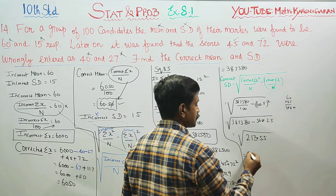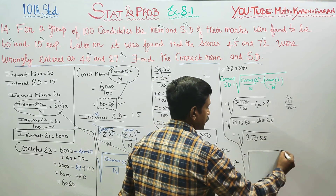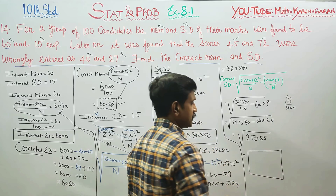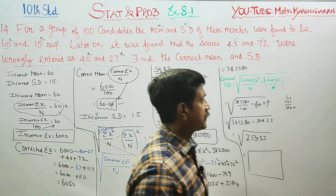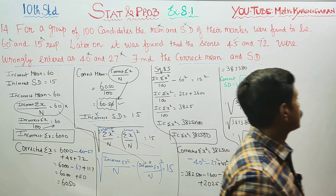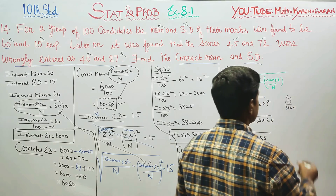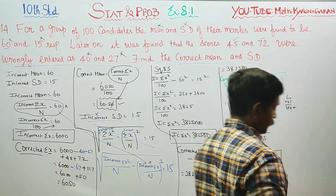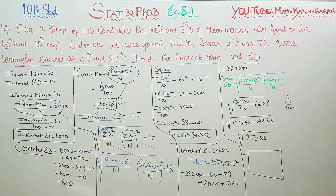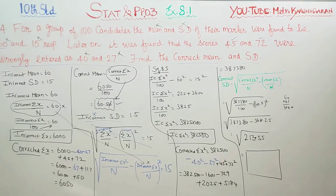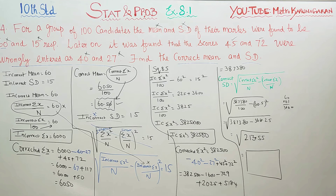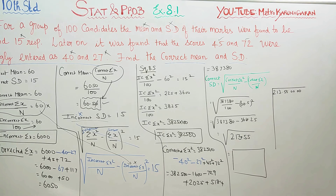This is the last stage — we will finish the sum by finding the square root. The next stage is finding the square root. We will start the square root calculation now.